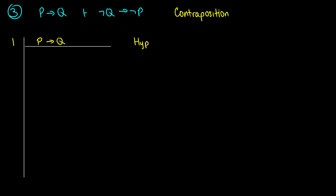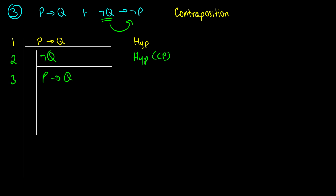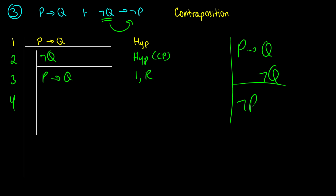Luckily the next two are a little more straightforward. We have P→Q, and we want to prove ¬Q→¬P from that — contraposition. I'm going to assume ¬Q for a conditional proof. This is a hypothesis for CP because I need to assume ¬Q and show I get ¬P. In line 3 I'm going to reiterate P→Q from line 1, and then in line 4 I'm going to use modus tollens. Since I have ¬Q and P→Q, I get ¬P — from lines 2 and 3, this is modus tollens. Then in line 5, ¬Q→¬P follows from lines 2 to 4 by conditional proof.